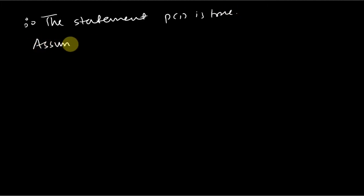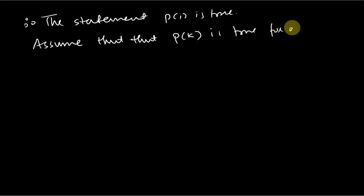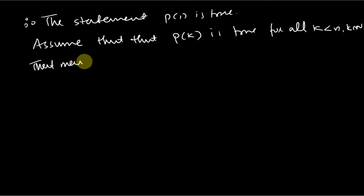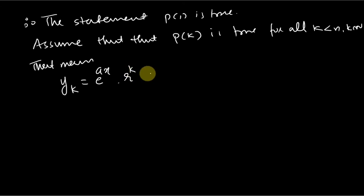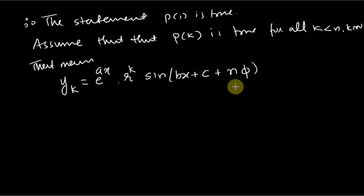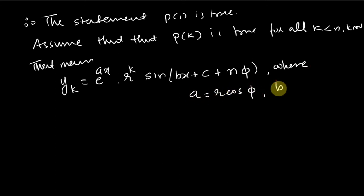Now we assume the result is true — that is, P(k) is true for all k less than n, where k belongs to the natural numbers. That means y_k = r^k · e^(ax) · sin(bx + c + kφ), where a = r cos φ and b = r sin φ.